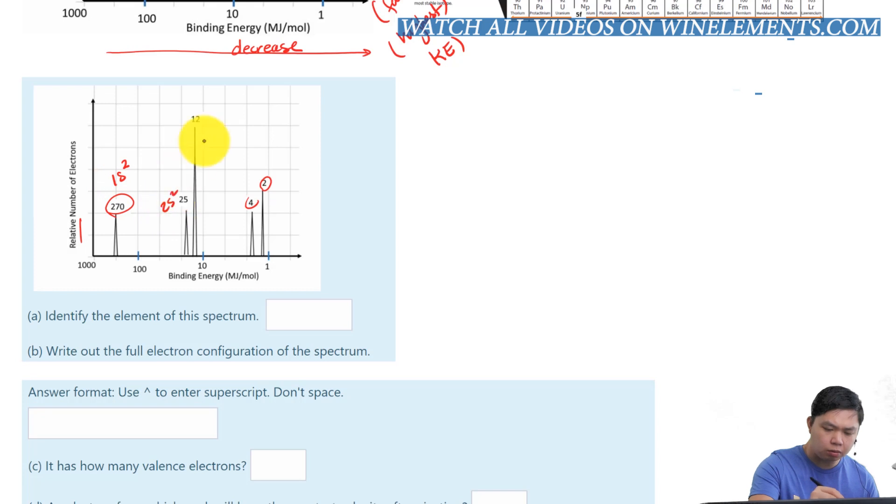we can write this as electron configuration. 1s2, 2s2, and 2p6, 3s2, and 3p1. Well, this is 2, this is a little bit half of it, right? So, this must be 3p3, there you go. You see how that works? So,